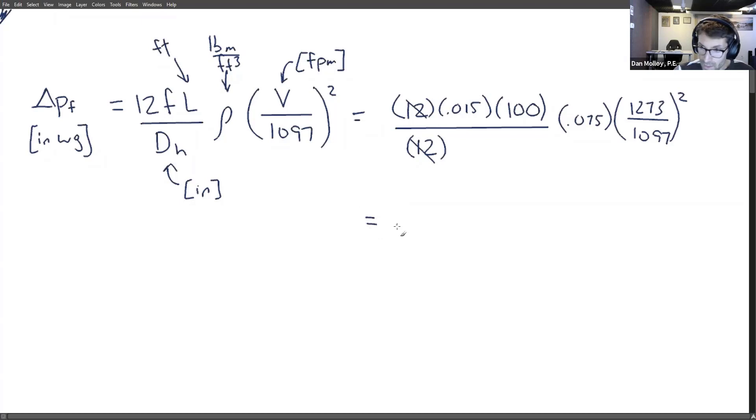And if all of those things happen, I'm getting 0.151 inches water gauge. And again, that's per 100 feet. If we exclude this term, this 100 feet here, then we would get the pressure loss for one foot.